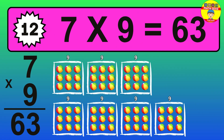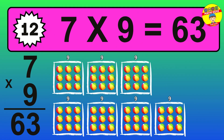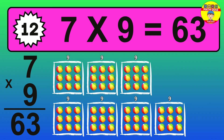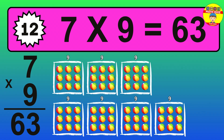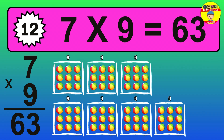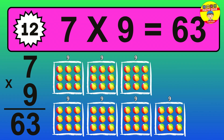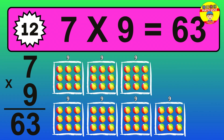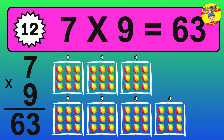The answer is 7 times 9 is 63. To calculate, we have 7 groups with 9 balls each one. So, how many balls do we have? 63 balls.